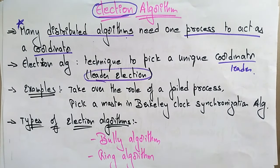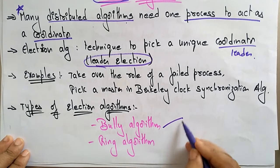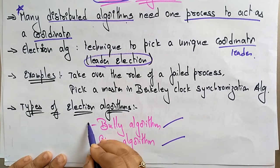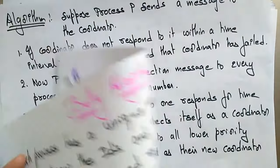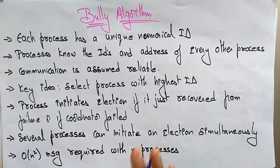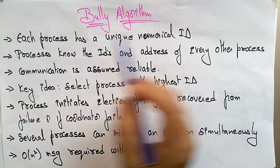The different types of election algorithms are the bully algorithm and the ring algorithm. In this video I'll explain the bully algorithm with an example, and then the ring algorithm with an example. Before going into the algorithm, let's understand the concept — if you know the concept, you can easily implement the algorithm and solve problems.